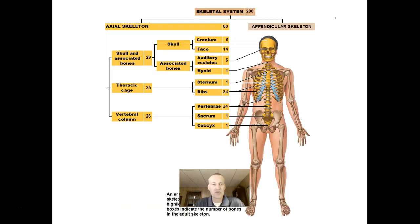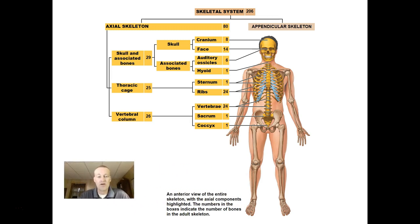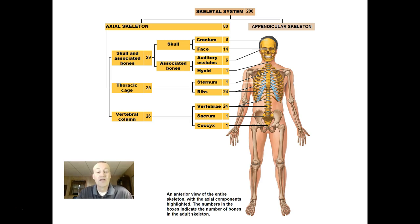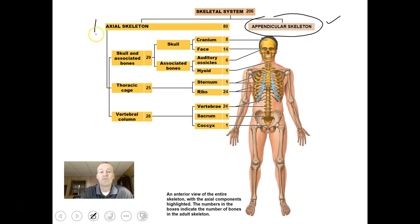In this lecture we want to focus on the axial skeleton. Bones are something you need to pick up in lab and study by feeling and looking at them. There are 80 bones in the axial skeleton — 80 out of the 206 you'll be responsible for knowing. Your skull and associated bones have about 29 bones total: the cranium has 8, the face has about 14, there are 6 inner ear bones, and 1 hyoid.